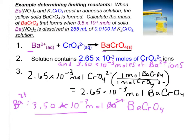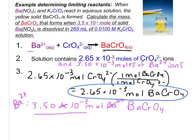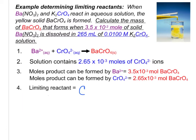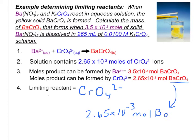So which one is the limiting reactant here? With the chromate ion, it's going to yield 2.65 times 10 to the negative 3 moles of product. The barium ion will yield 3.50 times 10 to the negative 3 moles. Which one is less? The chromate ion — so the chromate ion is the limiting reactant. The moles of barium chromate produced by the chromate ion is 2.65 times 10 to the negative 3 moles of barium chromate. We still don't know the mass of the barium chromate.